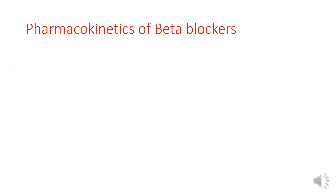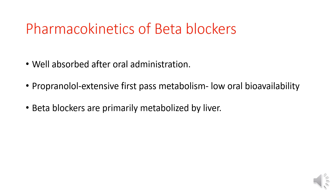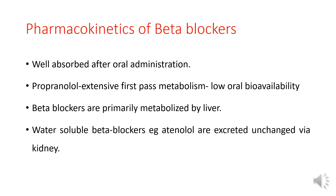Now we will see the pharmacokinetics of beta blockers. They are well absorbed after oral administration. Propranolol undergoes extensive first-pass metabolism, resulting in low oral bioavailability. Beta blockers are primarily metabolized by the liver. Water-soluble beta blockers, for example atenolol, are excreted unchanged via the kidney.